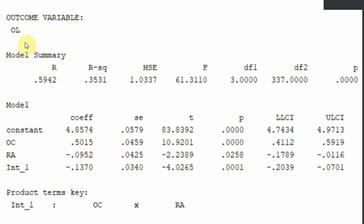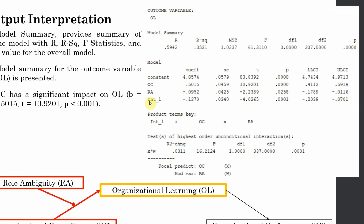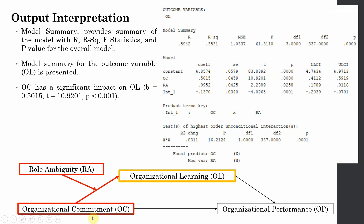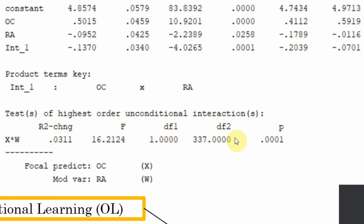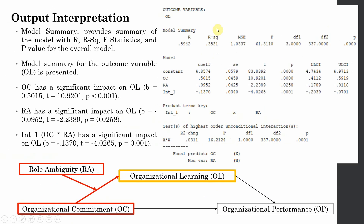OC has a significant impact on organizational learning. Role ambiguity also has a significant impact on organizational learning, and the interaction between role ambiguity and organizational commitment also significantly influences organizational learning. The interaction effect is significant, meaning this relationship is being moderated by role ambiguity. The interaction term leads to a significant change in R-square, with confidence intervals not including zero. R-square shows 35% of change in organizational learning is accounted for by these three predictors.